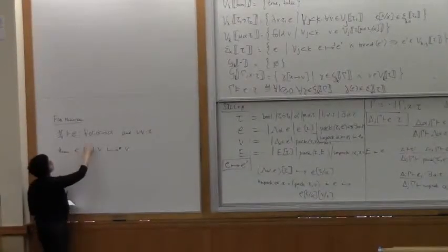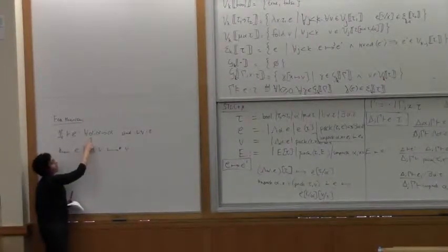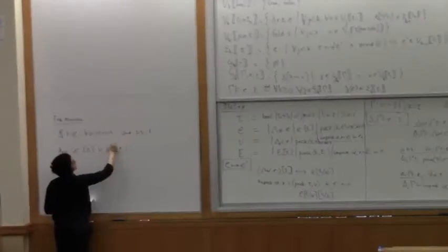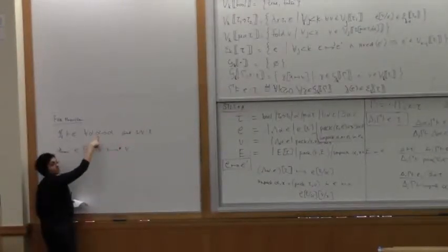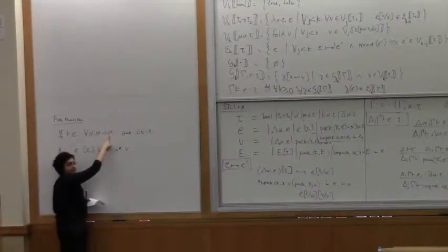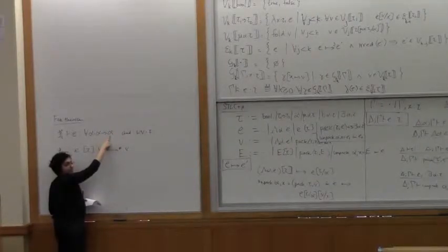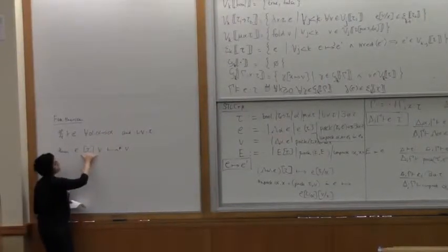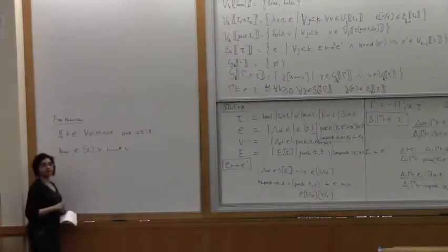The intuition being that this is a polymorphic function. You give it any arbitrary type tau, and then you give it a value of type tau, so the input. The only alpha that it can ever return to you is the input that it got. So evaluating this expression will always give you back the input.